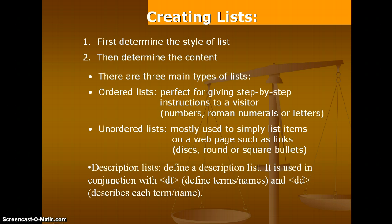The unordered list also has some types like disc, circle, or square bullets. The third one is the description list, which is used when we describe data elements. To define a description list, it is used in conjunction with DT, which means define terms or name, and DD, which means describes each term or name.